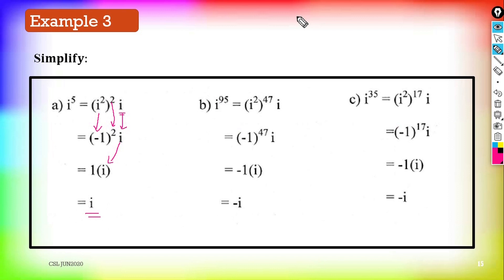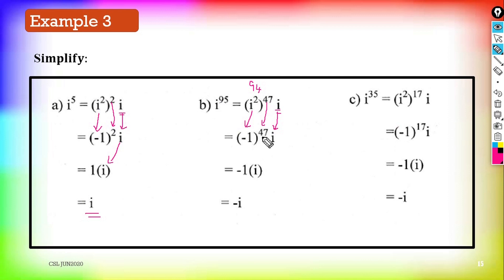(b) i^95. We put i² into the bracket. 2 × 47 = 94, so i^95 = (i²)^47 × i. Replace i² with −1: (−1)^47 × i. Since 47 is an odd number, (−1)^47 = −1. Therefore, −1 × i = −i.